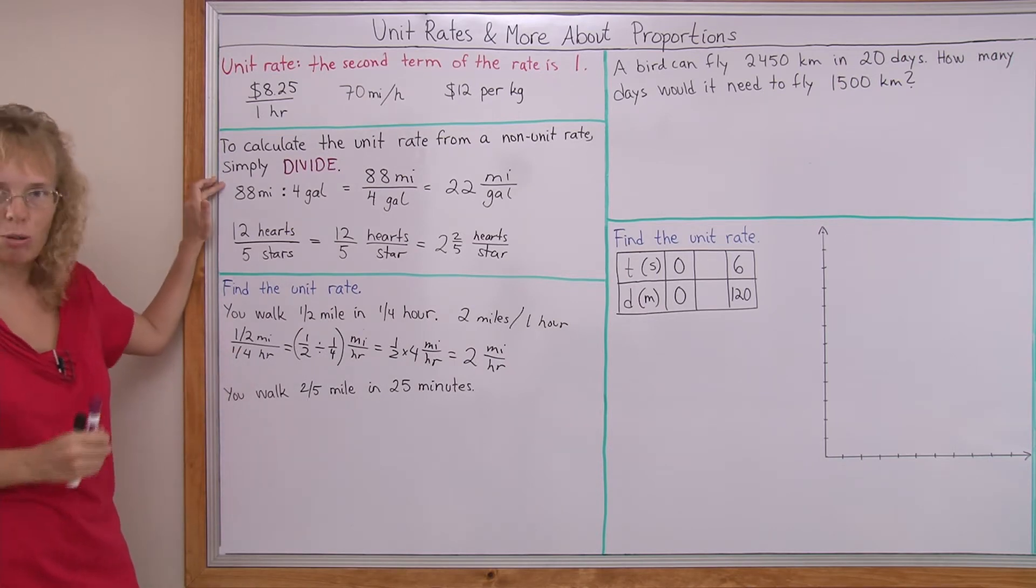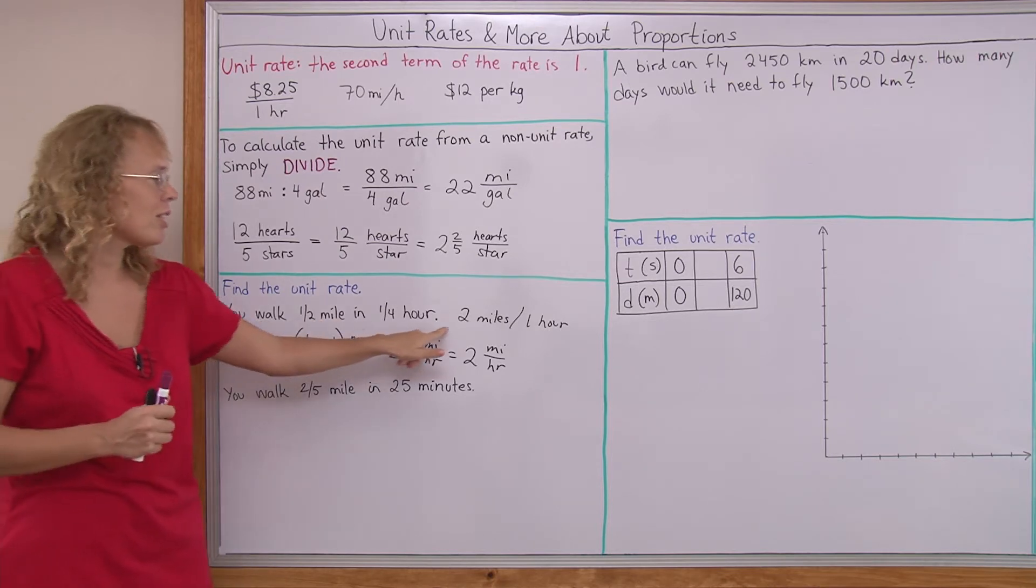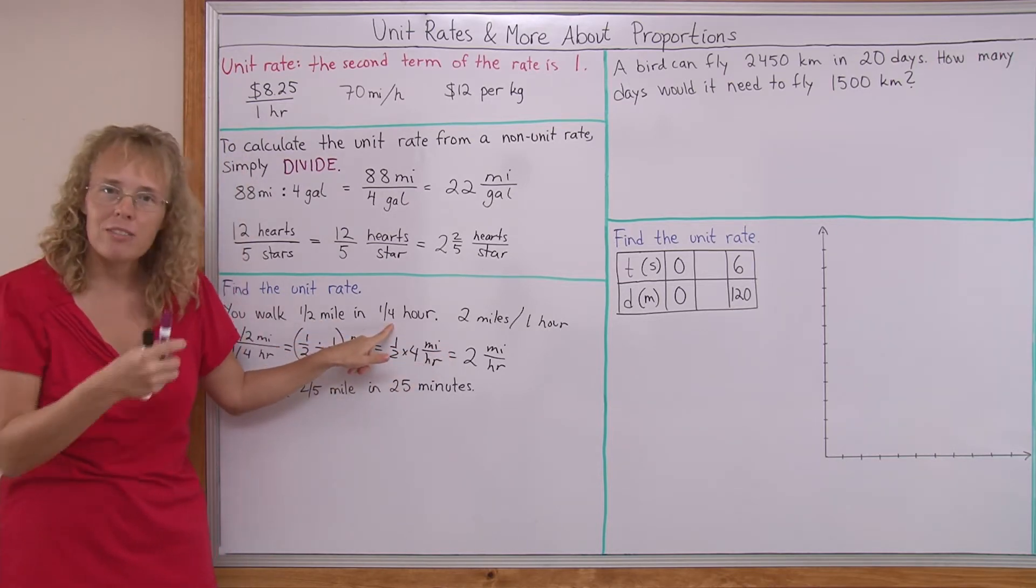So division works always for finding the unit rate, but sometimes, like in this case, we figure it out by multiplying, because it was a fractional part of an hour.